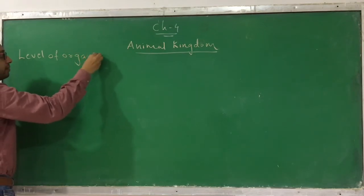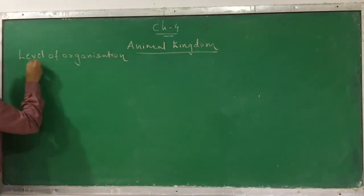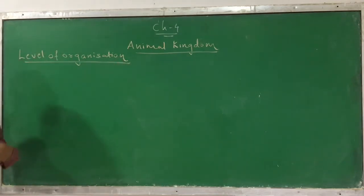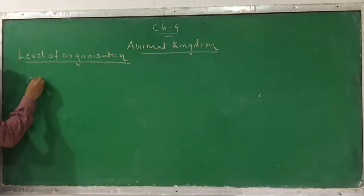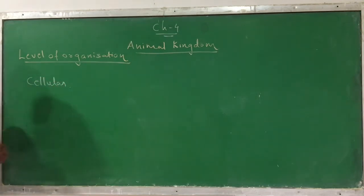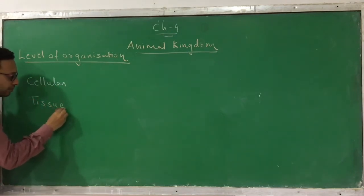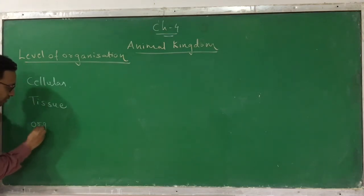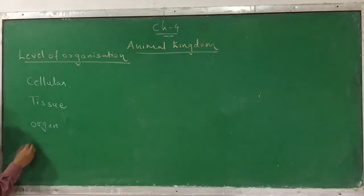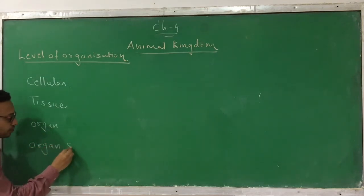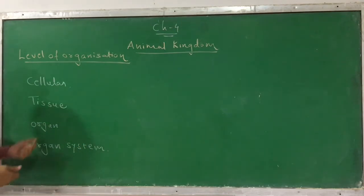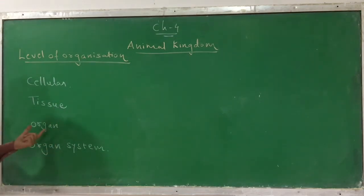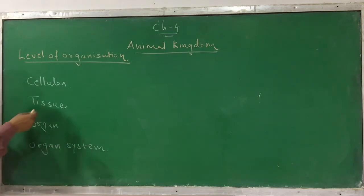This is the first criteria based on which the animals can be classified — it is called the level of organization. Which level of organization do they have? Do they have cellular level of organization, meaning they just have cells? Do they have a tissue layer? Do they have organ level of organization, meaning they have organs? And do they have organ system level of organization? There are animals which just have cells, animals where cells combine to form tissues, animals with organs, and animals with organ systems.